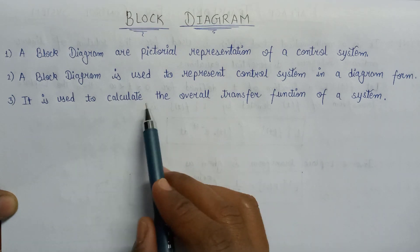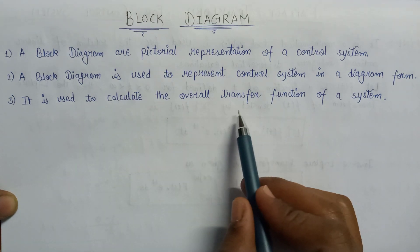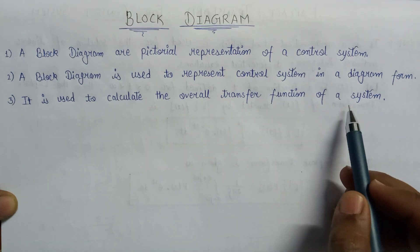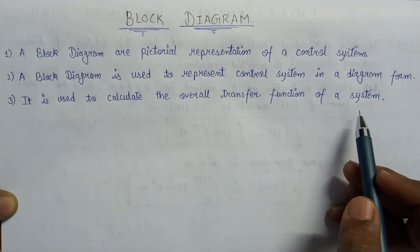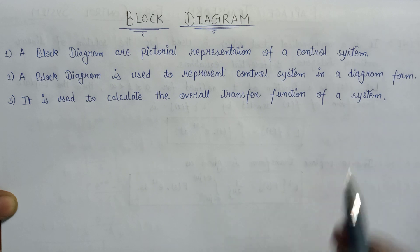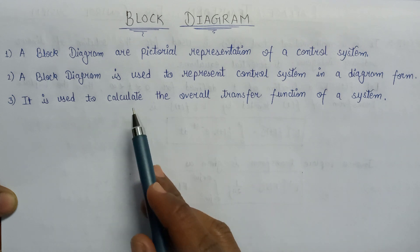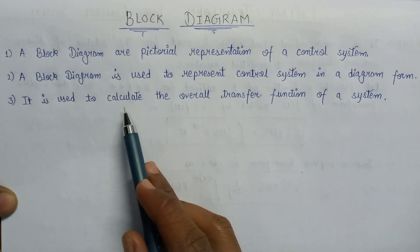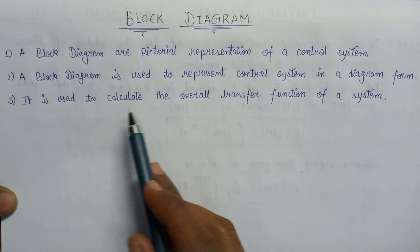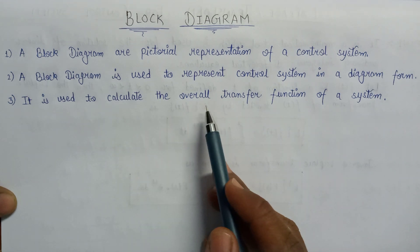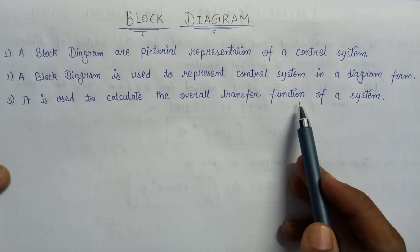A block diagram is used to calculate the overall transfer function of a system. We will discuss the transfer function in upcoming videos, but the basic advantage of the block diagram is to calculate the overall transfer function of a system.